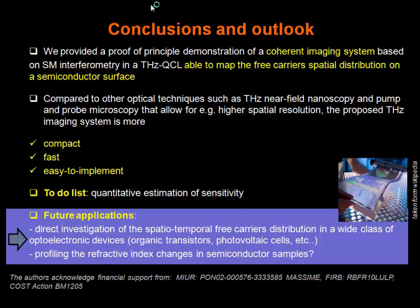Compared with other optical techniques that achieve roughly the same thing — for example, Terahertz near-field nanoscopy or pump-and-probe microscopy — we have less spatial resolution, but we believe the proposed system is more compact, fast, and easy to implement. As future directions, we have in mind to use this imaging technique to map, for example, the spatiotemporal free carrier distributions in a wide class of electronic devices, such as organic transistors. Thank you for your attention.